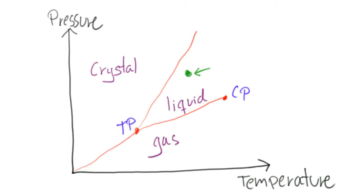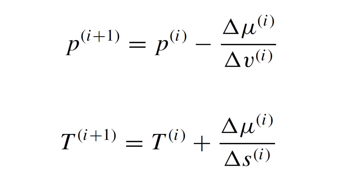We can either follow an isotherm or an isobar. Along an isotherm the next pressure in a series of iterations is given by the upper equation. The lower equation gives the temperatures along an isobar.